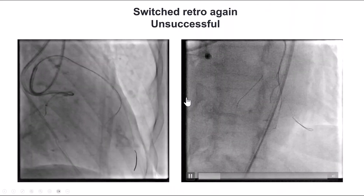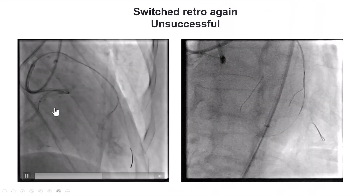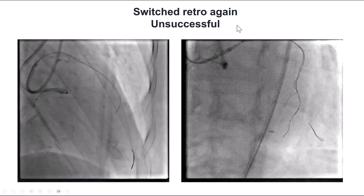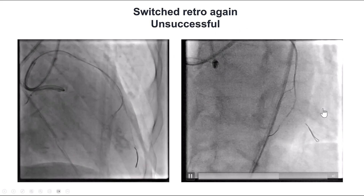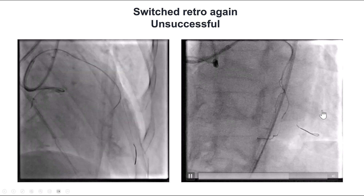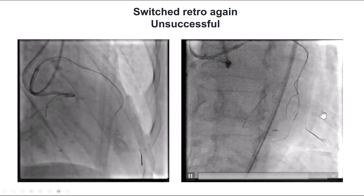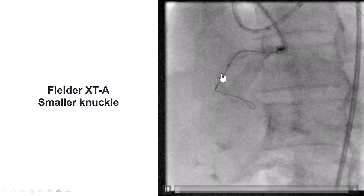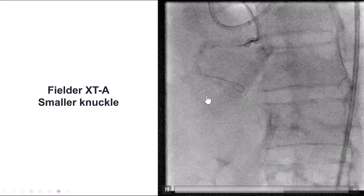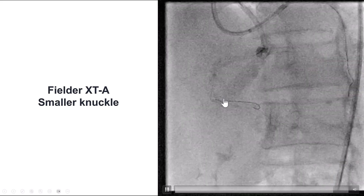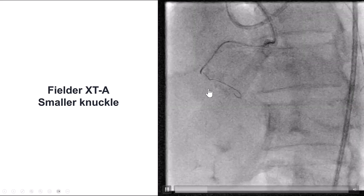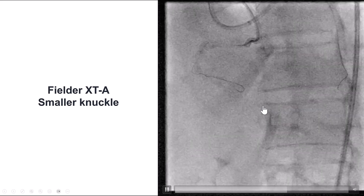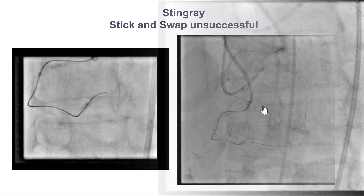After doing that, we still had difficulty delivering anything through the mid-RCA, so we tried retrograde again, but once again we were unsuccessful despite trying multiple collaterals. Back to antegrade, this time using the Fielder XTA, which seemed to create a smaller knuckle that advanced along the course of the calcium and the vessel.